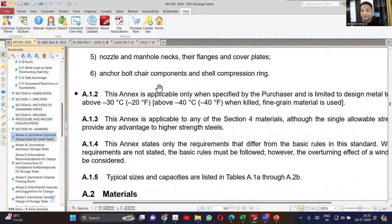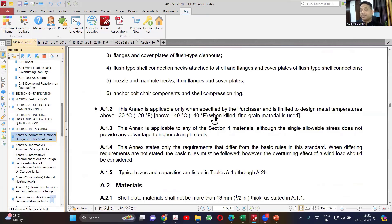Now the second important part: this annexure is applicable when the purchaser is limiting the design metal temperature above minus 30. You cannot use it less than minus 30.